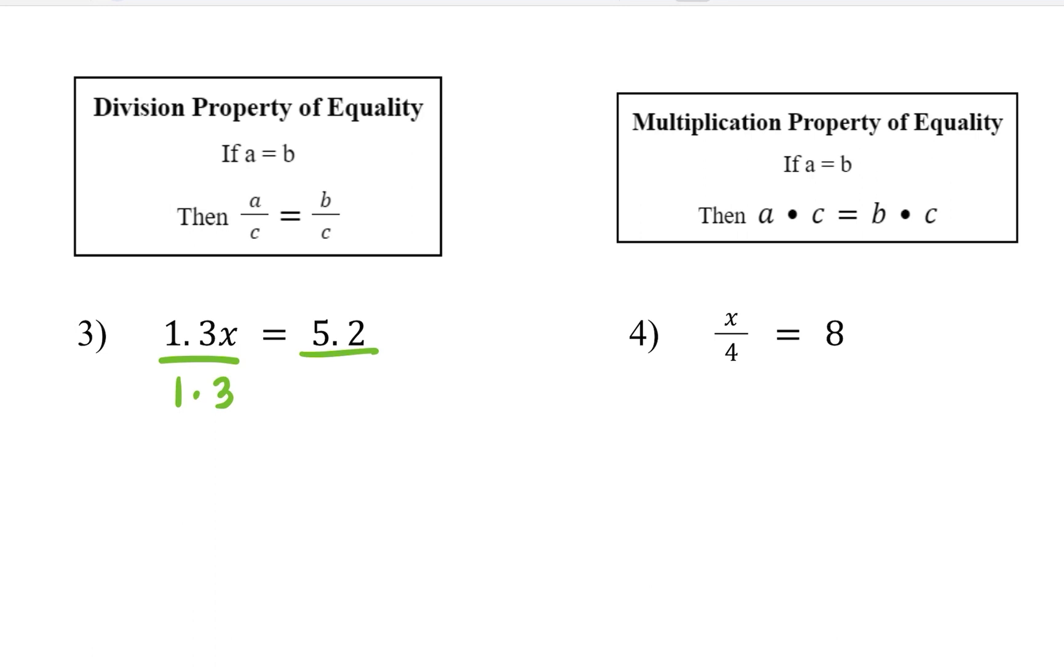So 1.3 divided by 1.3 is equal to 1. We are going to drop x. We did nothing to x. And so 5.2 divided by 1.3 is 4. So our final answer is 1x equals 4, or we can write x is equal to 4.